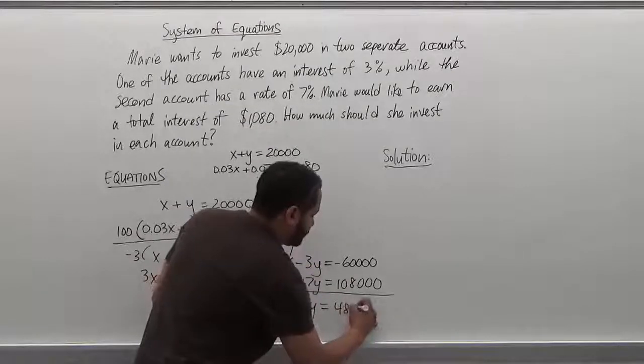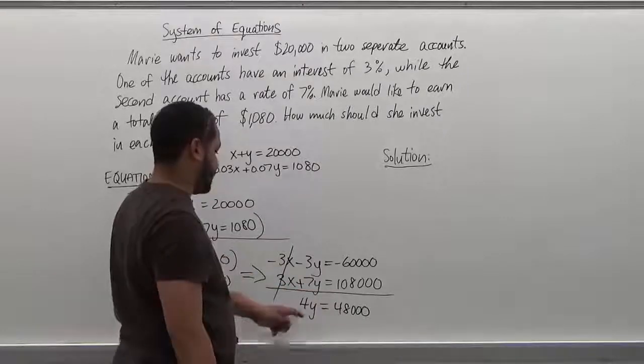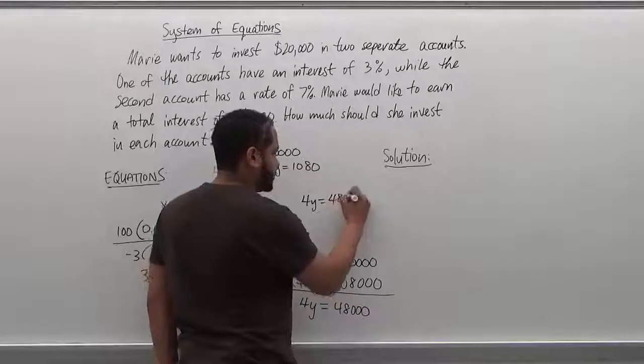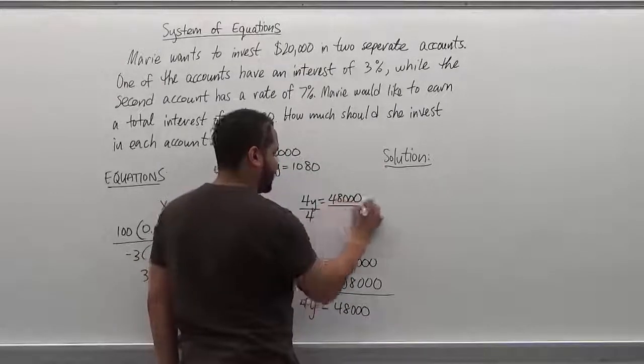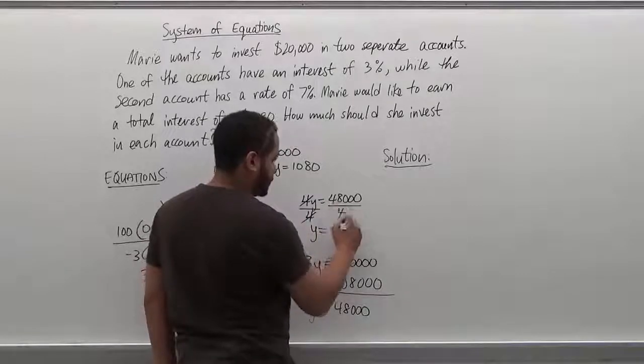If you can't see the subtraction clearly, make sure you use the calculator. Now we're going to take the 4y and divide the 48,000 to get the value of y. So we're dividing by four on both sides. The fours go away. Y is equivalent to 12,000.